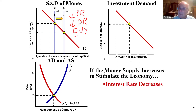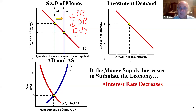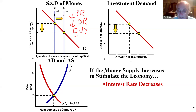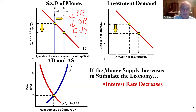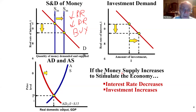Interest rates down. There are a lot of questions on this. Interest rates down — existing bond prices up. There's that inverse relationship. I like this graph because you don't have to think about what's going to happen to investment — you just slide it across and look. Investment increases.